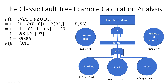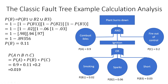Now we know the probability for fuel source (A), ignition (B), and oxygen (C). To have the fire, we need all three — fuel source, ignition, and oxygen — so we use the AND gate formula: multiply all the probabilities together. The probability that the plant can burn down is 0.019. That is how fault tree analysis works.